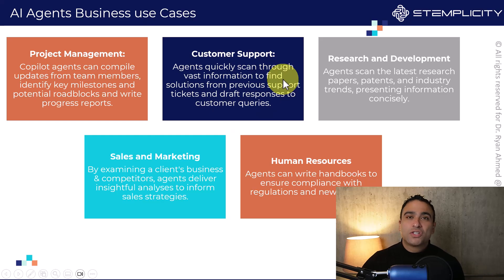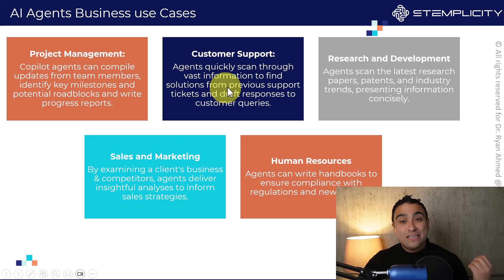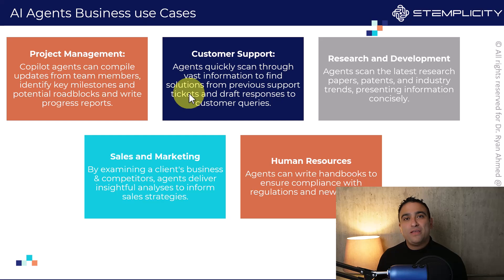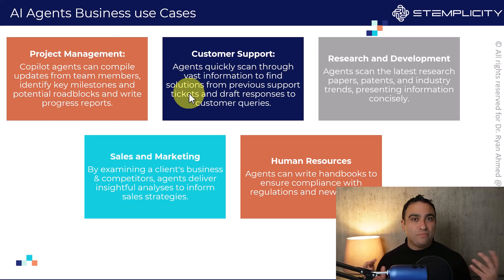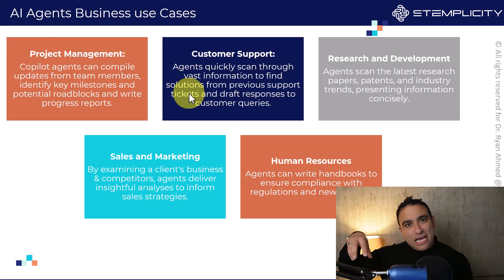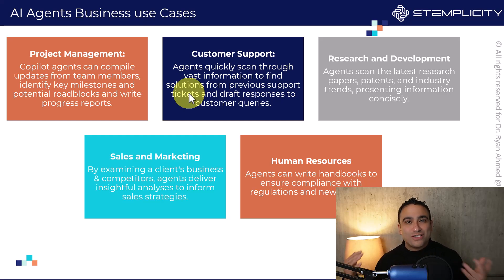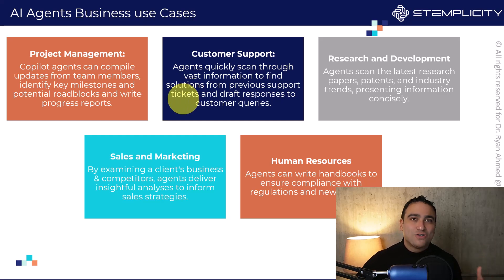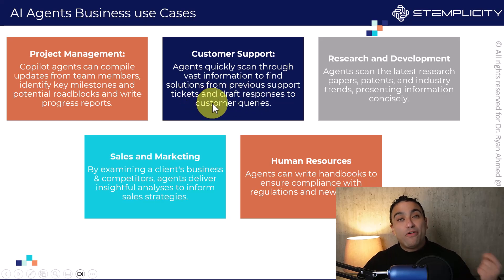You can also use artificial intelligence agents for customer support. Agents can quickly scan through vast information — think of a company with many support tickets that customers opened before with solutions already provided. An AI agent can read the entire database, understand all the previous answers, and simply draft responses to customers autonomously.